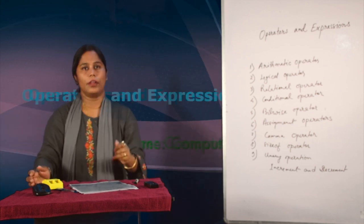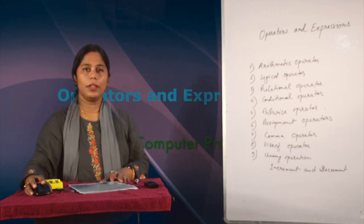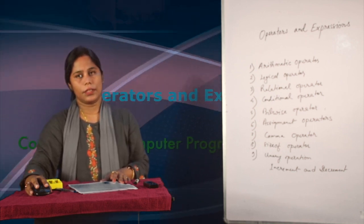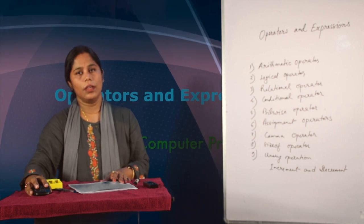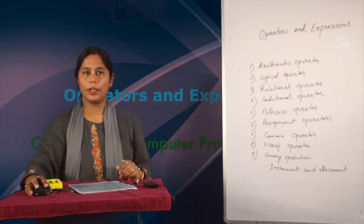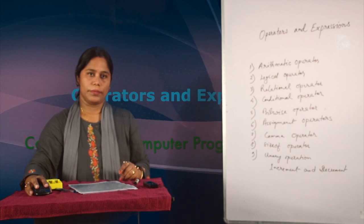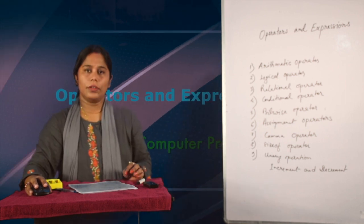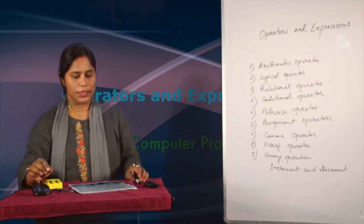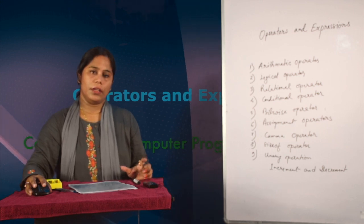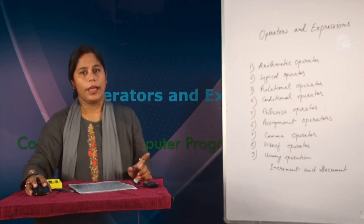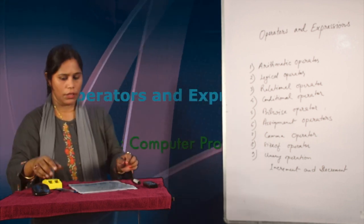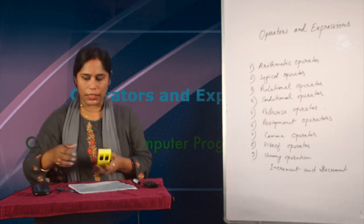Let me discuss arithmetic operators. Arithmetic operators can be applied to any integer and floating point numbers. The addition, subtraction, multiplication, and division operators perform the usual arithmetic operations in C programs. But the modulus operator performs differently — it is denoted by the percentage symbol and gives the remainder of a division, while the division operator gives the result of a division.